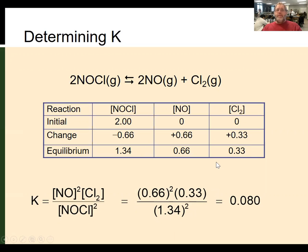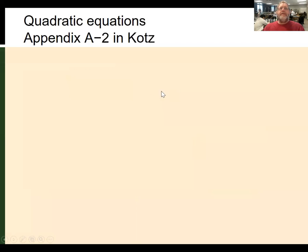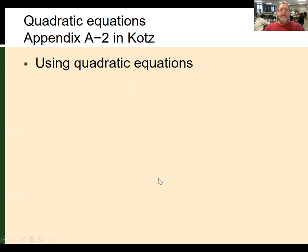There are times when you're going to have unknowns involved. When you have unknowns, you start putting variables in there. One of the problems with variables is that sometimes you end up with a quadratic equation, so we're going to do a quick review of quadratic equations.